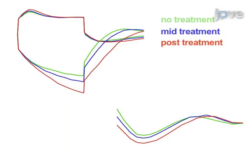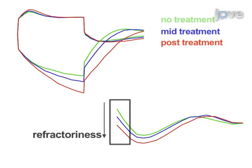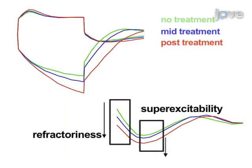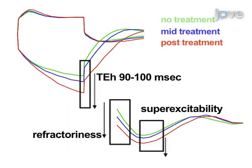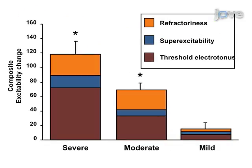Key parameters for assessment include refractoriness, supra-excitability, and extent of threshold change in threshold electrotonous, in addition to conventional parameters such as peak amplitude and latency. To assess overall change in excitability parameters across treatment, calculate a composite excitability score. The change in these three parameters should be summed from initial to final treatments to give an overall marker of change.